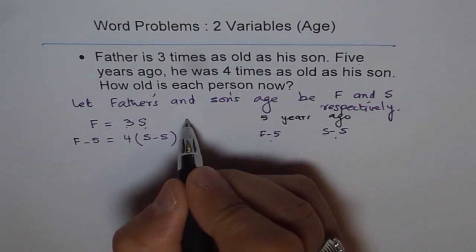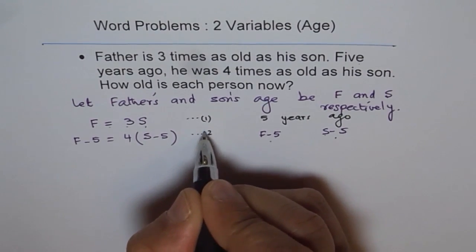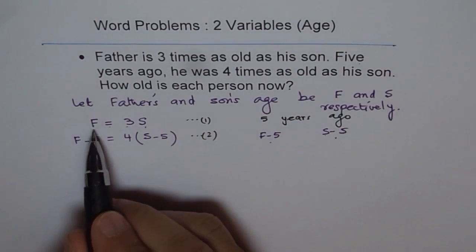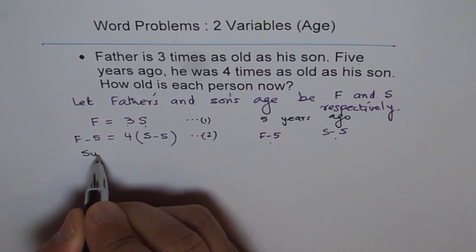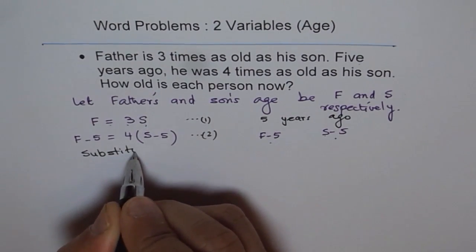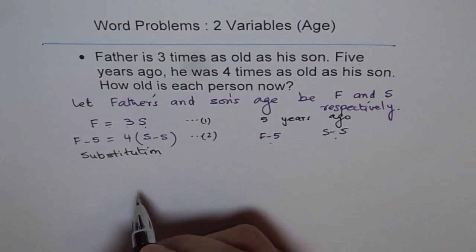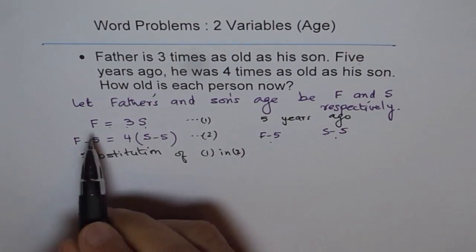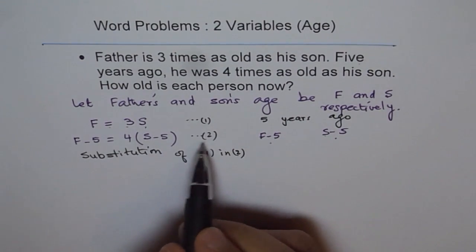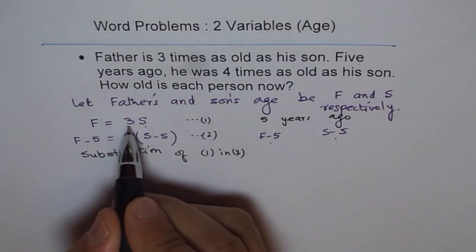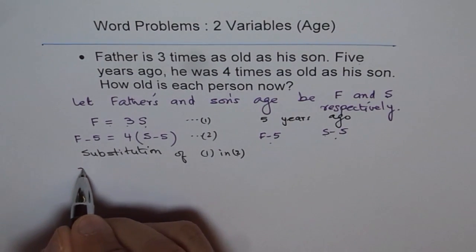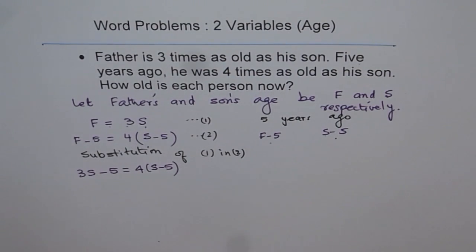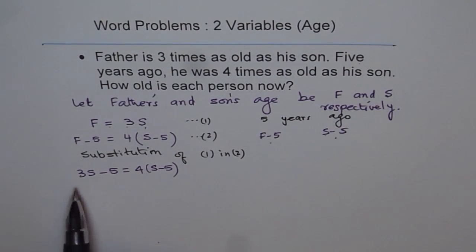Now, once we have two variables and two equations, we can solve for the variables. Since we know f equals 3s, we can use substitution. We will substitute equation one into equation two. That means the value of f from equation one will be substituted in equation two. So instead of f, we write 3s: 3s minus 5 equals 4 times (s minus 5). Now we have an equation in one variable, so we can solve for s.